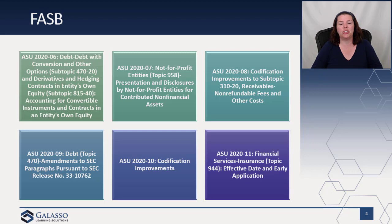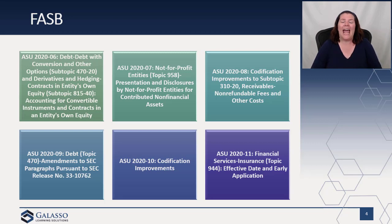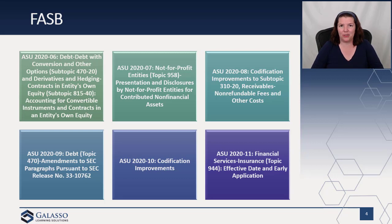ASU 2020-06 reduces cost and complexity and tries to improve comparability with convertible instruments. There are a lot of different models that get very different outcomes, so they reduce the number of models and streamline convertible instruments as well as contracts in an entity's own equity — a nice simplification for those impacted. ASU 2020-07 will impact just not-for-profit entities, with additional presentation and disclosure requirements for gifts in kind or contributed non-financial assets. This addresses a regulatory push, as many regulators were unhappy with the measurement of fair value for donated items — providing more insight and transparency into the calculation without changing how fair value is calculated.